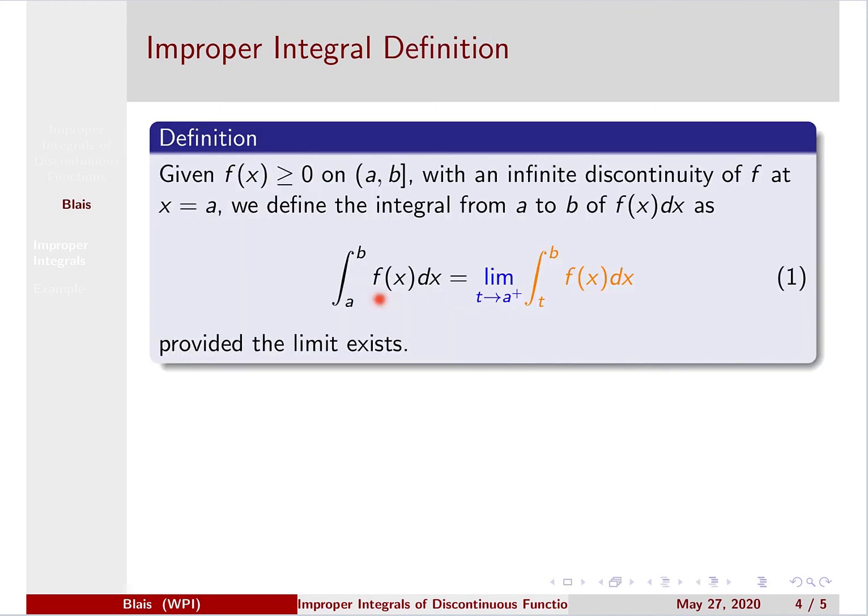And this is how we define this type of improper integral. So for f(x) non-negative on (a, b), with an infinite discontinuity of f at x equals a, we define the integral from a to b of f(x)dx in the way we just wrote, provided the limit exists. So we have a classical definite integral, and then we have a classical limit problem after we have that definite integral evaluated and we get an expression in terms of t.